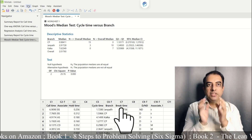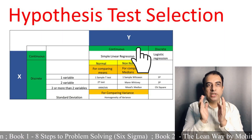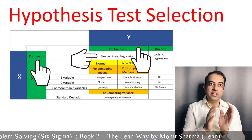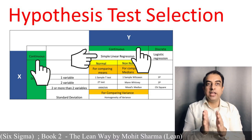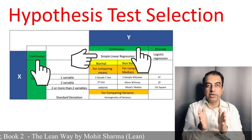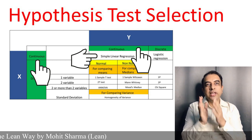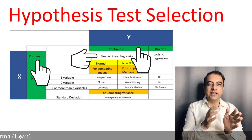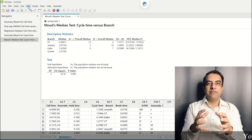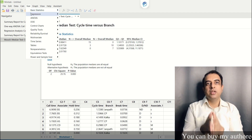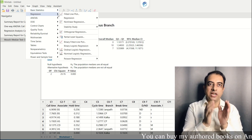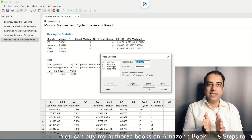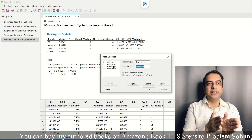The second X is break time, which is a continuous X. When Y is continuous and X is also continuous, we use simple linear regression. The normality of Y is not a dependency for this test — whether Y is normal or non-normal, we use simple linear regression. We go to Stat → Regression → Fitted Line Plot, entering cycle time as Response and break time as Predictor.